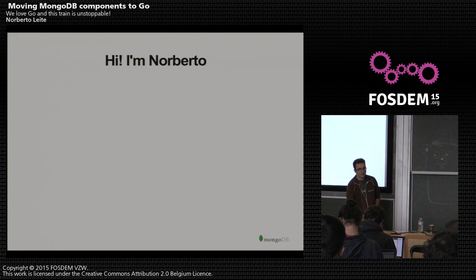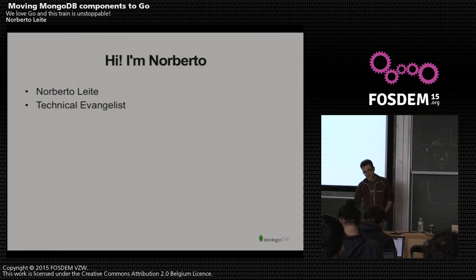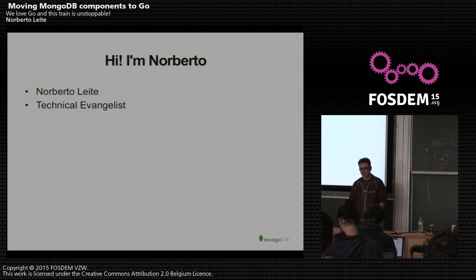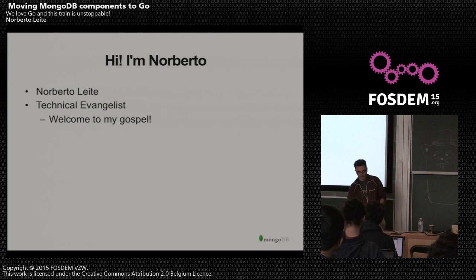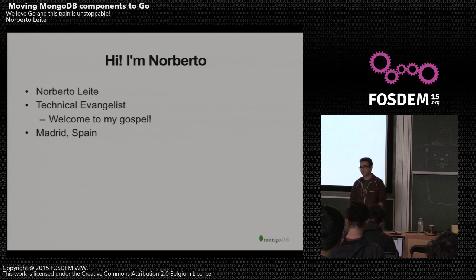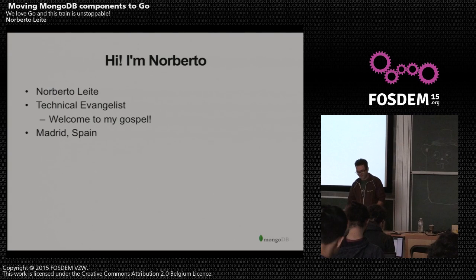So who am I? I'm Norberto. I'm a technical evangelist for MongoDB — you can see by the swag I'm carrying. I generally explain what we do with technology and how you can use MongoDB to build applications. This is a little bit of my gospel. I'm based out of Madrid, although I'm not Spanish — I just happen to live there.